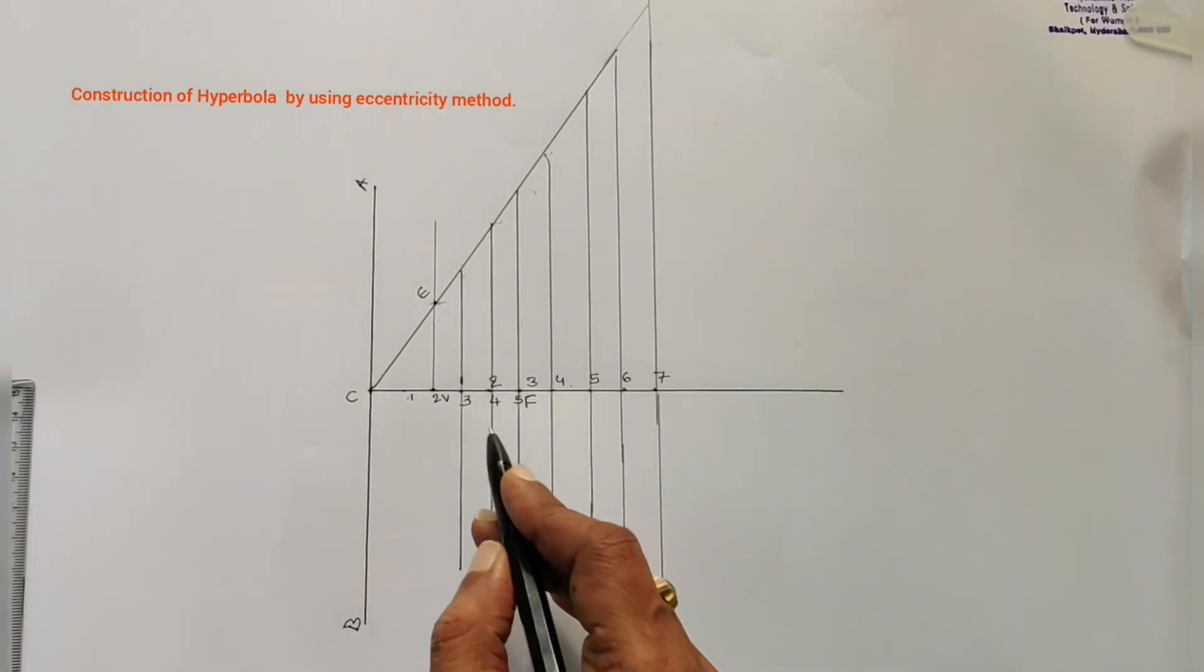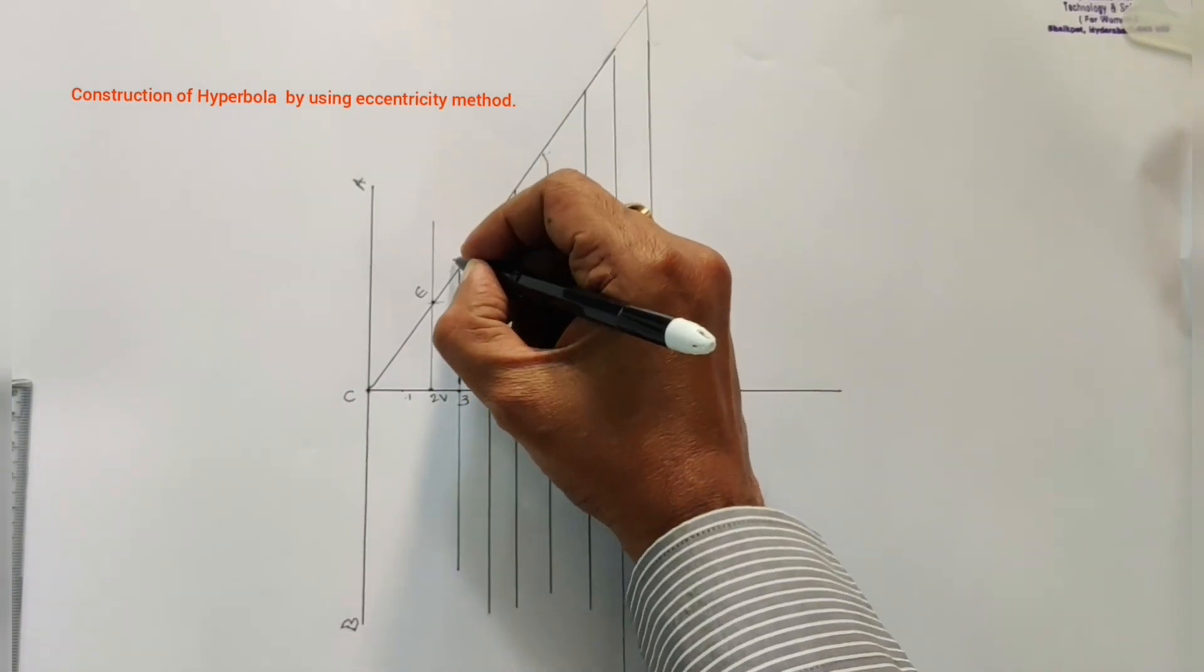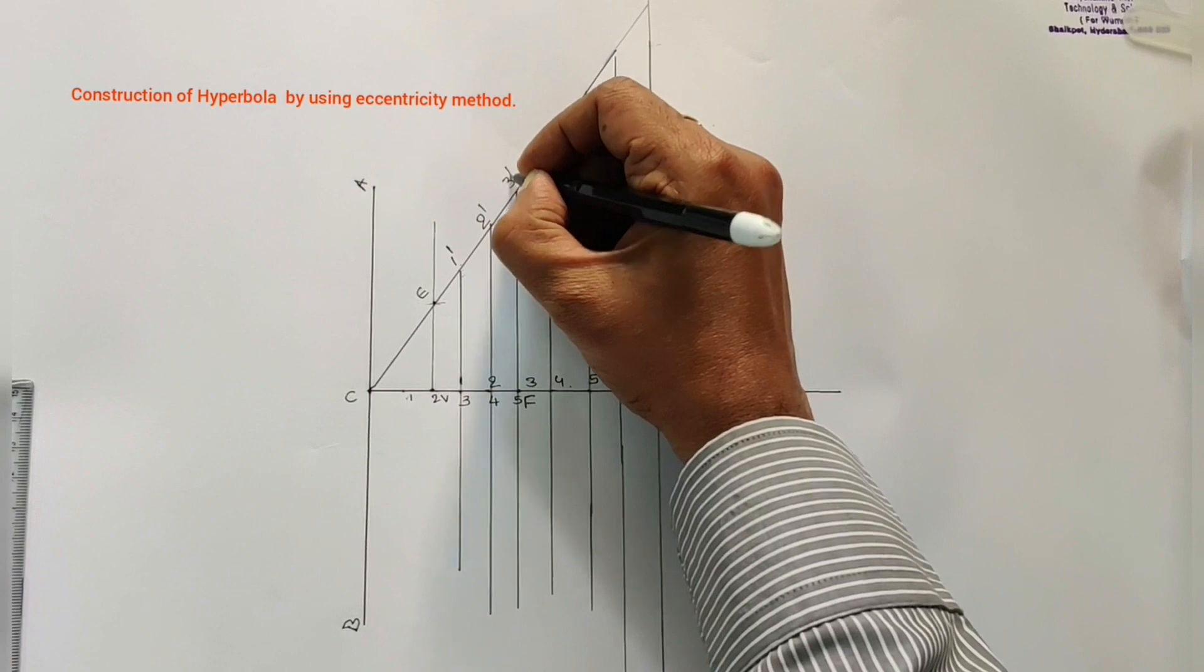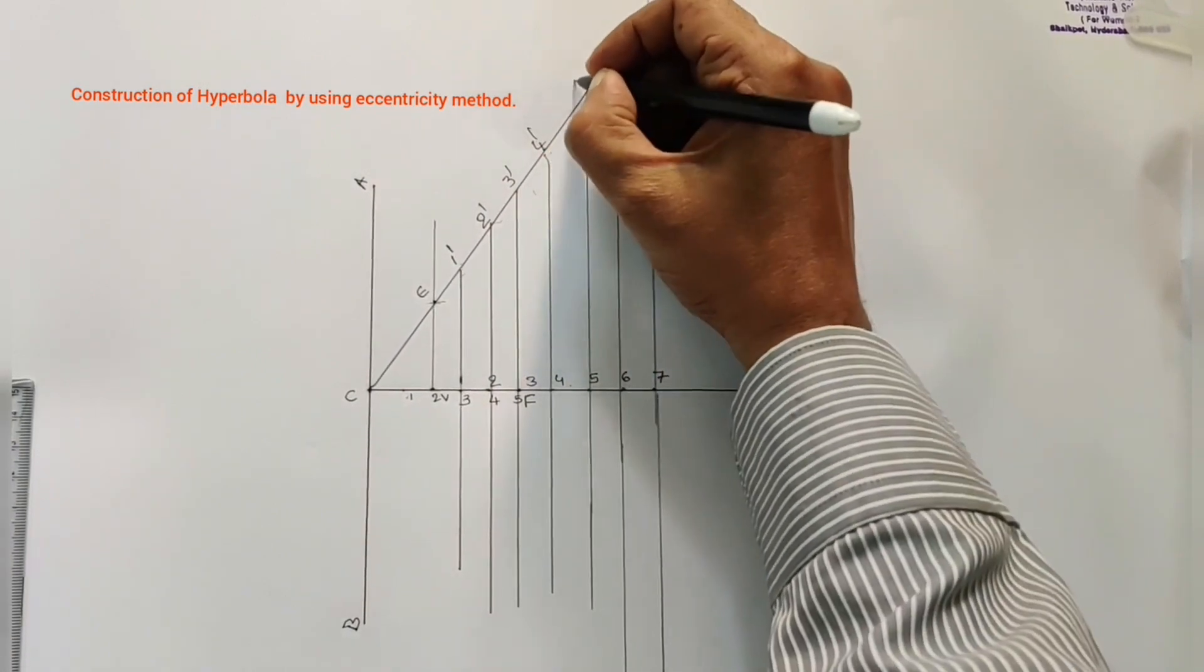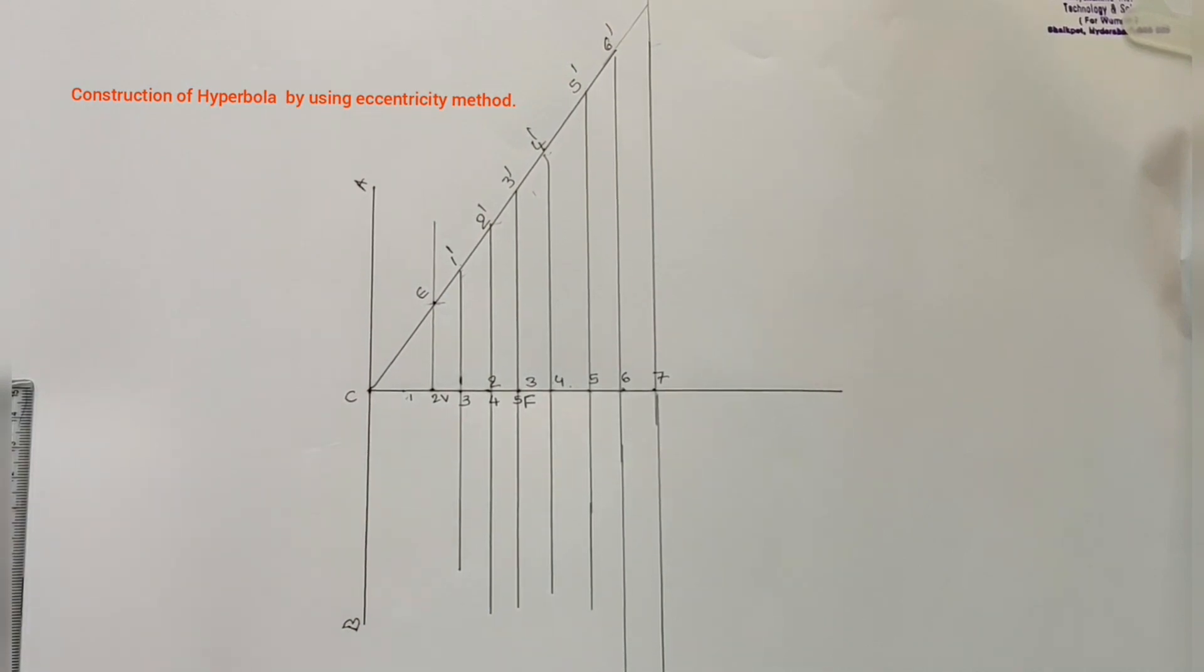After drawing the perpendicular lines to the axis, then give numbers here: one dash, two dash, three dash, four dash, five dash, six dash like that.